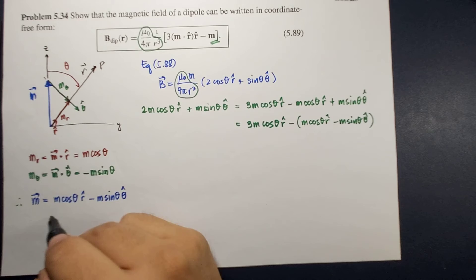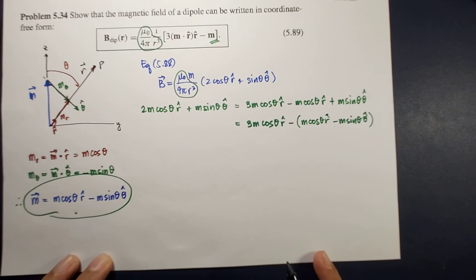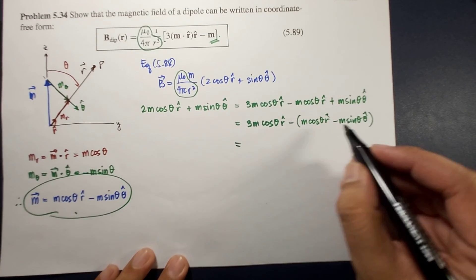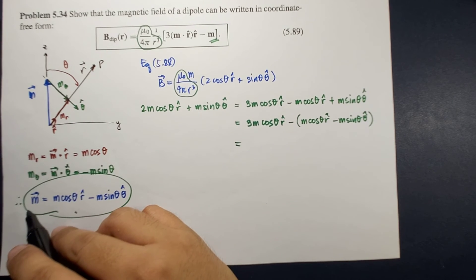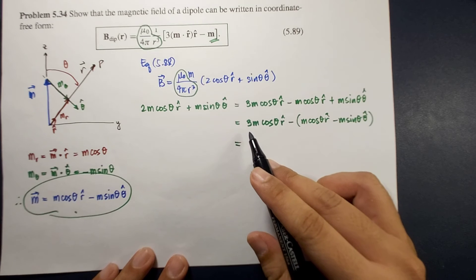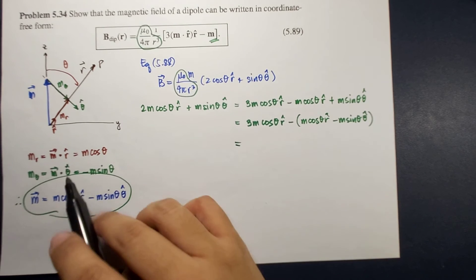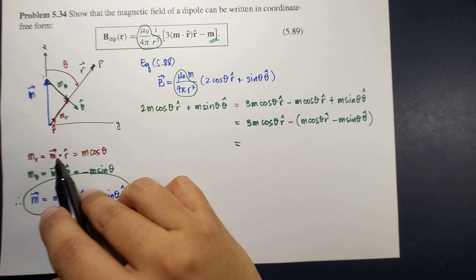which is this one. Okay, so this one is m, so this one is m vector or your dipole moment. Whereas m cosine theta is m_r or m dot r hat.